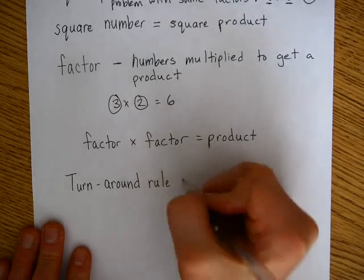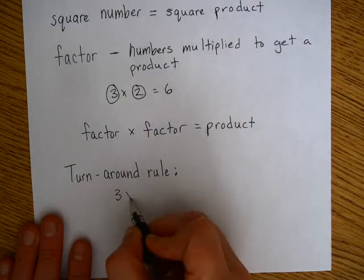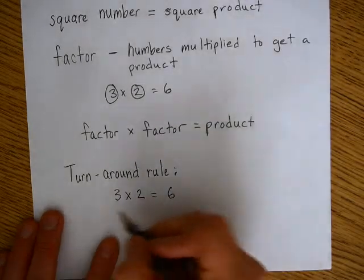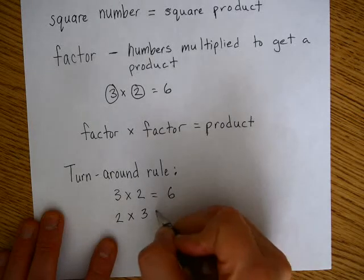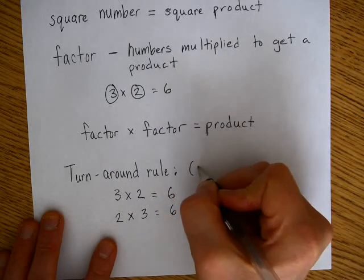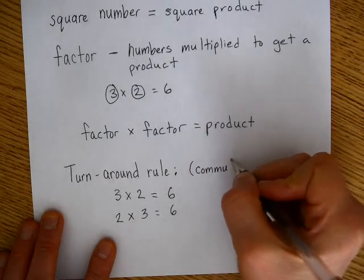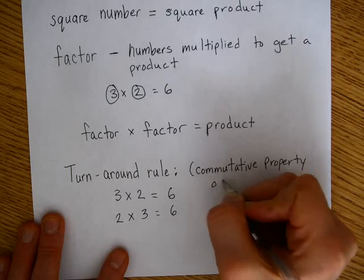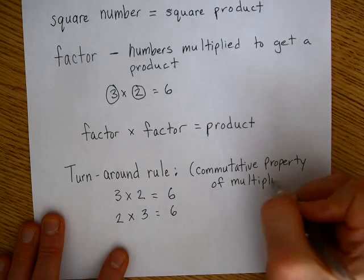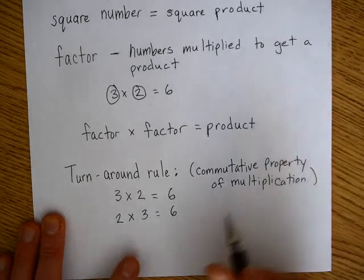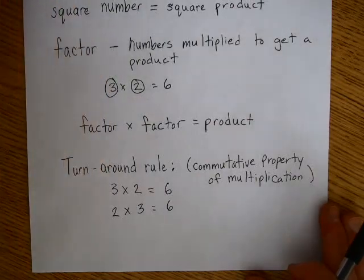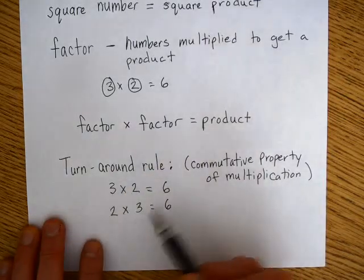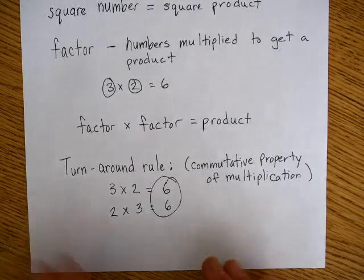For the turnaround rule, that means that if 3 times 2 equals 6, then you can turn that around and say 2 times 3 also equals 6. That's what many people know as the commutative property of multiplication. We don't expect third graders to remember that term — what we want them to know is that for multiplication, if they turn the factors around, they will still get the same product.